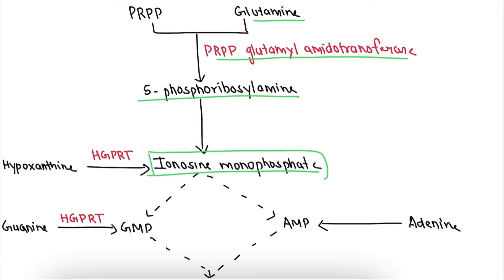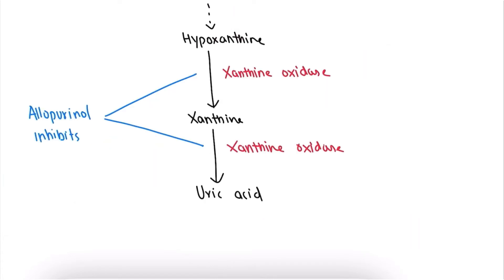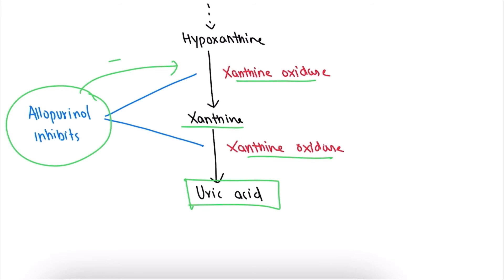This inosine monophosphate is linked to the salvage pathway: hypoxanthine can be converted back to IMP by HGPRT (hypoxanthine-guanine phosphoribosyl transferase). Similarly, guanine is converted to GMP by HGPRT, and adenine to AMP by a separate enzyme. Hypoxanthine in the presence of xanthine oxidase is converted to xanthine, and xanthine is again converted by xanthine oxidase to uric acid — the final product of purine degradation. Allopurinol inhibits xanthine oxidase.